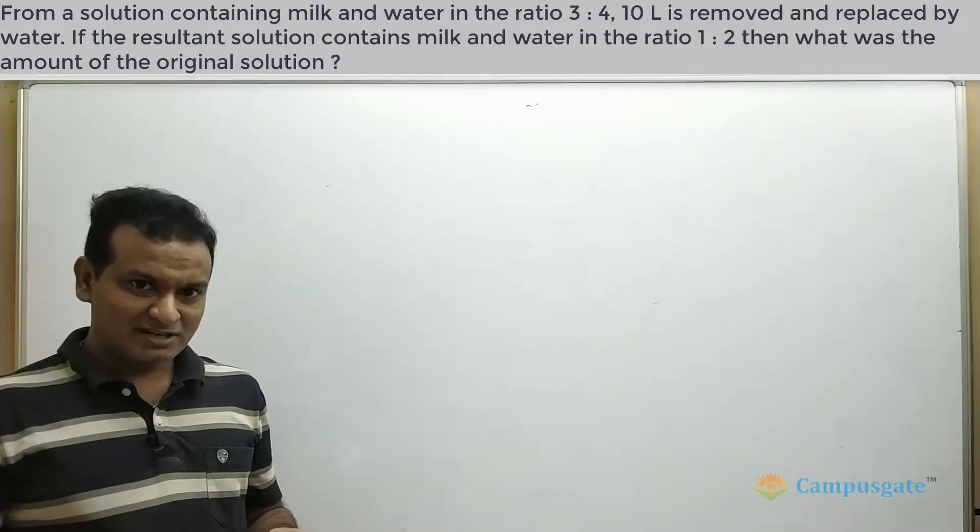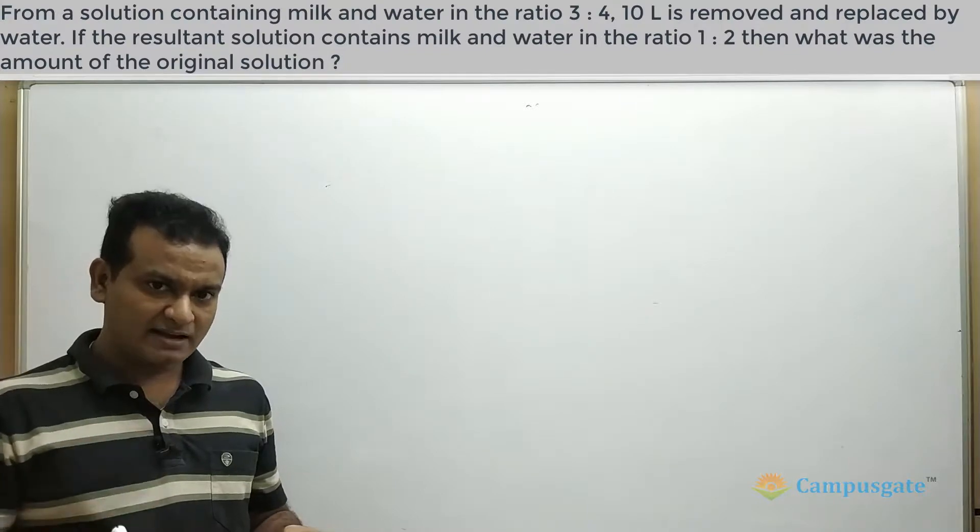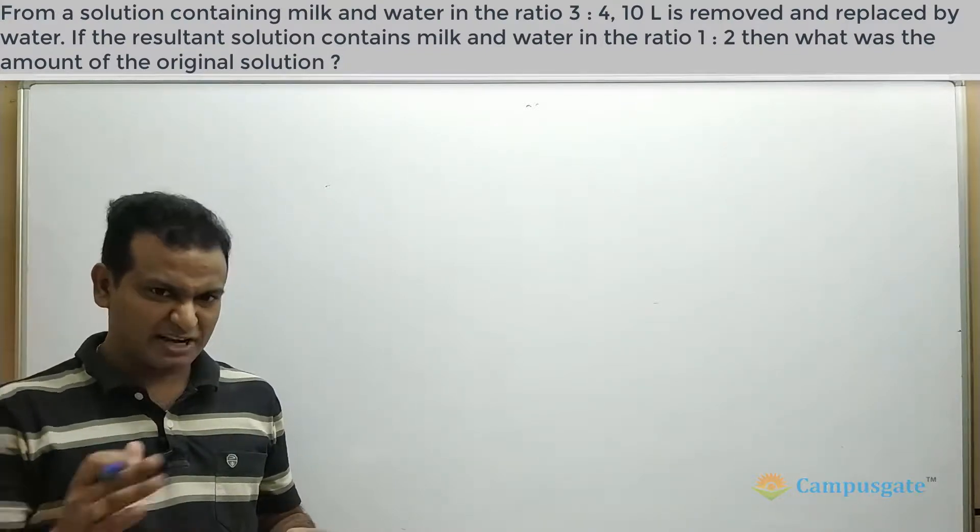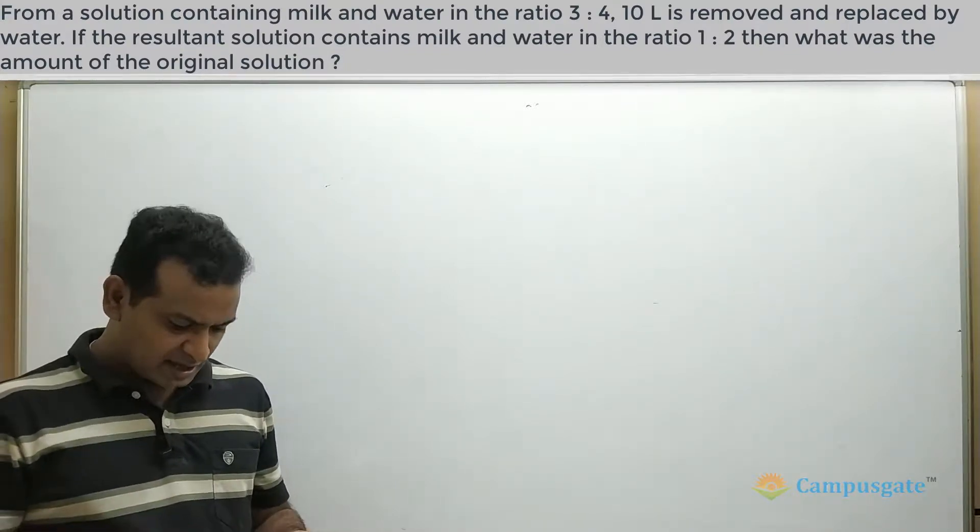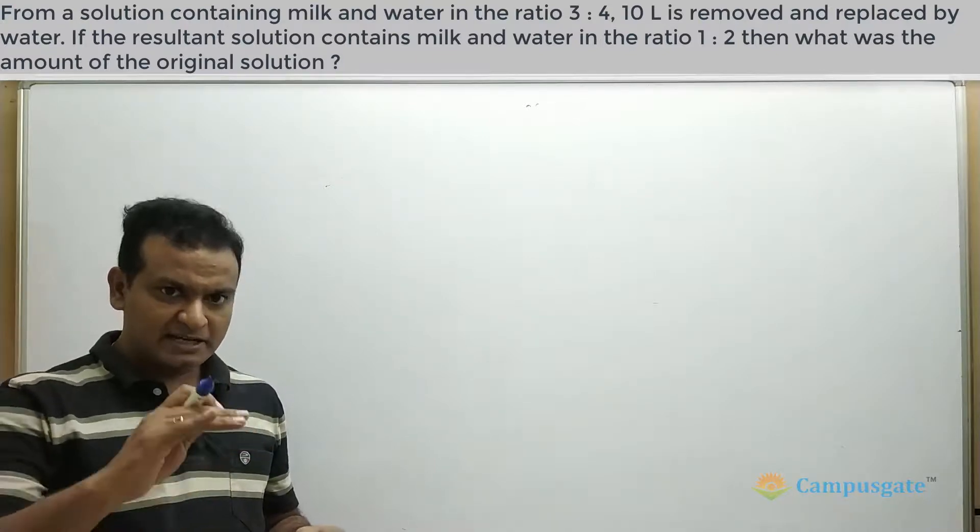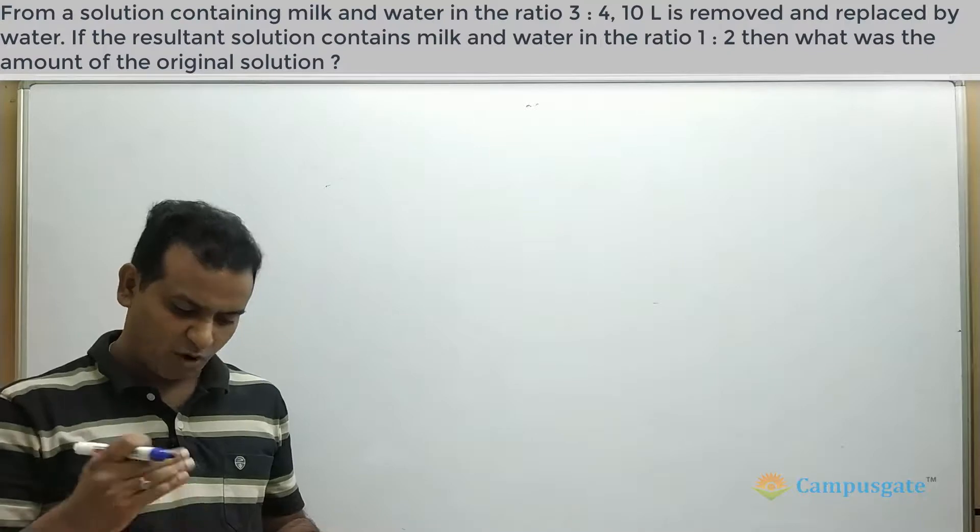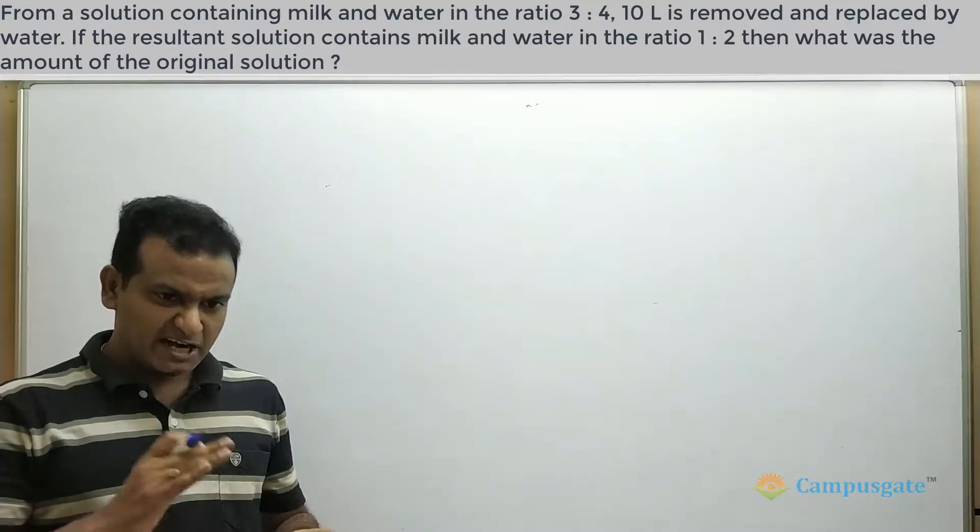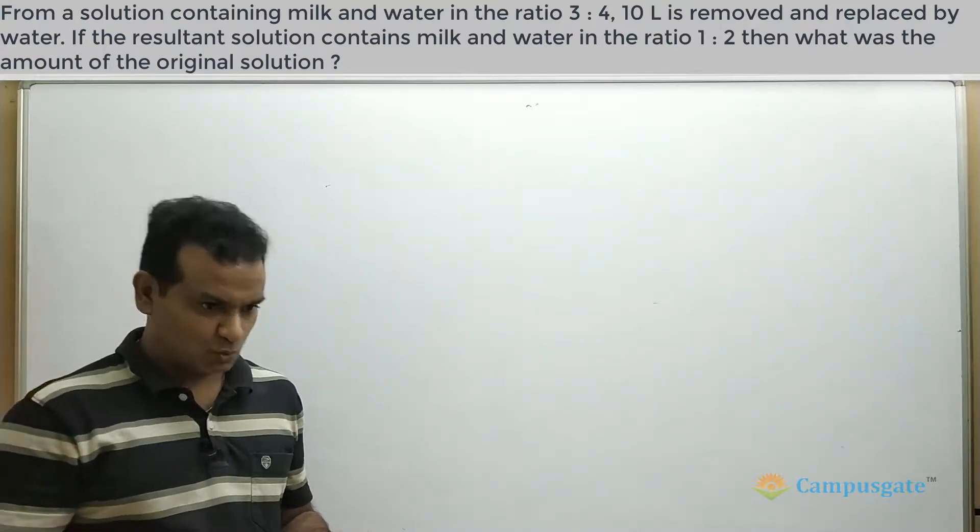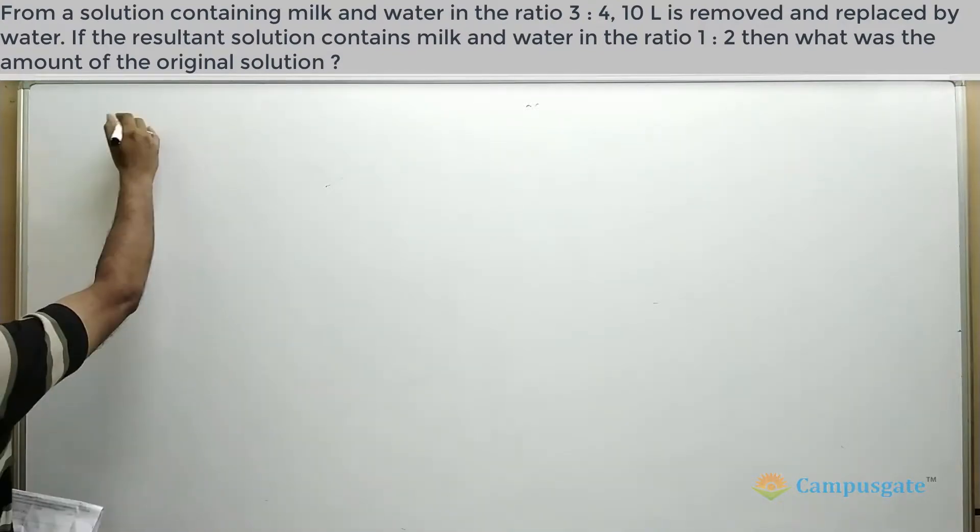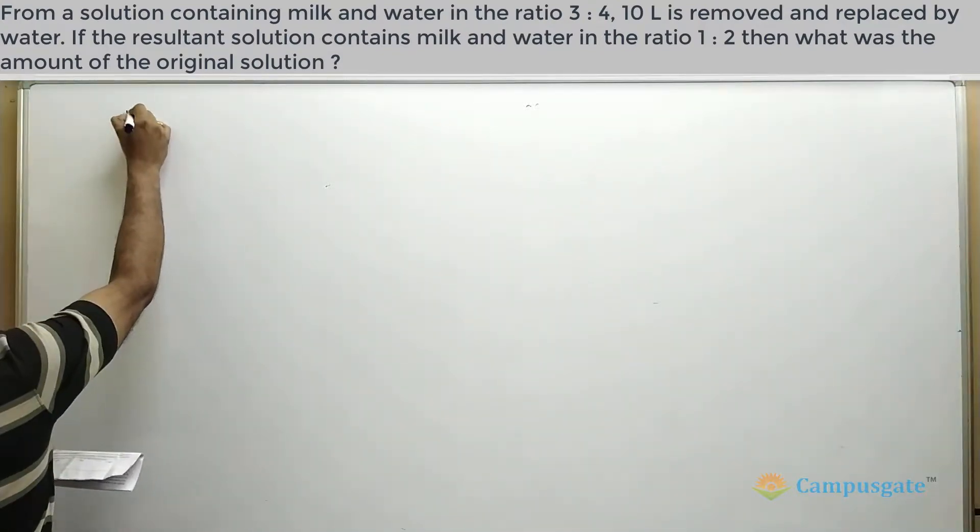Hi, another interesting question. In this question it is given that the milk and water are in the ratio 3 is to 4 initially, and 10 liters of this mixture was removed and replaced with water. Now the milk and water are in the ratio 1 is to 2.